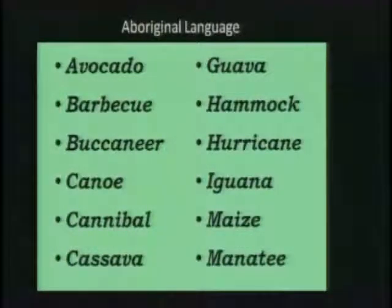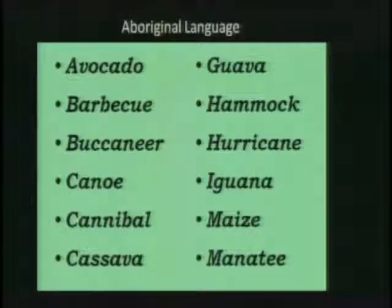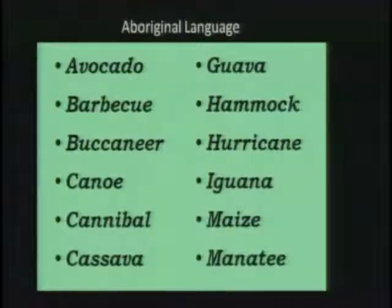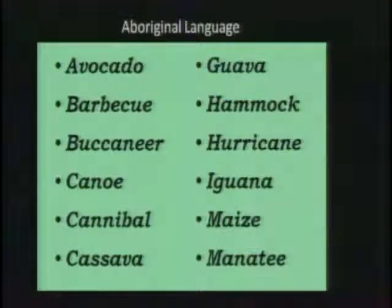Arawak and Karib cultures gave the English language many words we frequently use to this day. The next time you order an avocado or have a barbecue, remember the people who gave us these words. They also gave us foods such as peanuts, pineapples, pumpkins, and potatoes. Of note are the cashews, tomatoes, and tobacco that the native tribes cultivated. Their crops spread around the world.